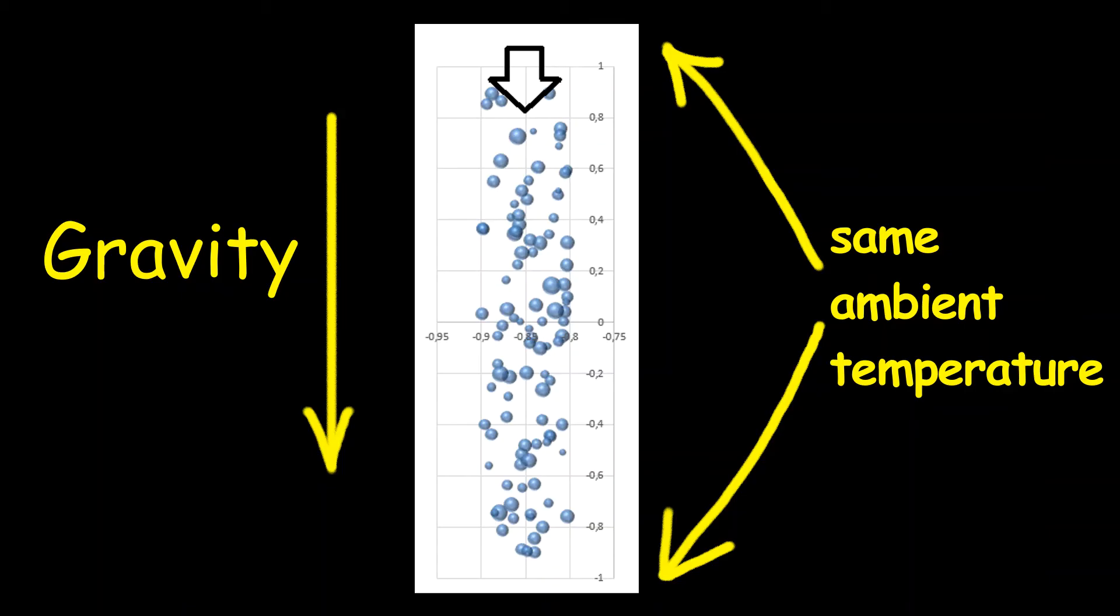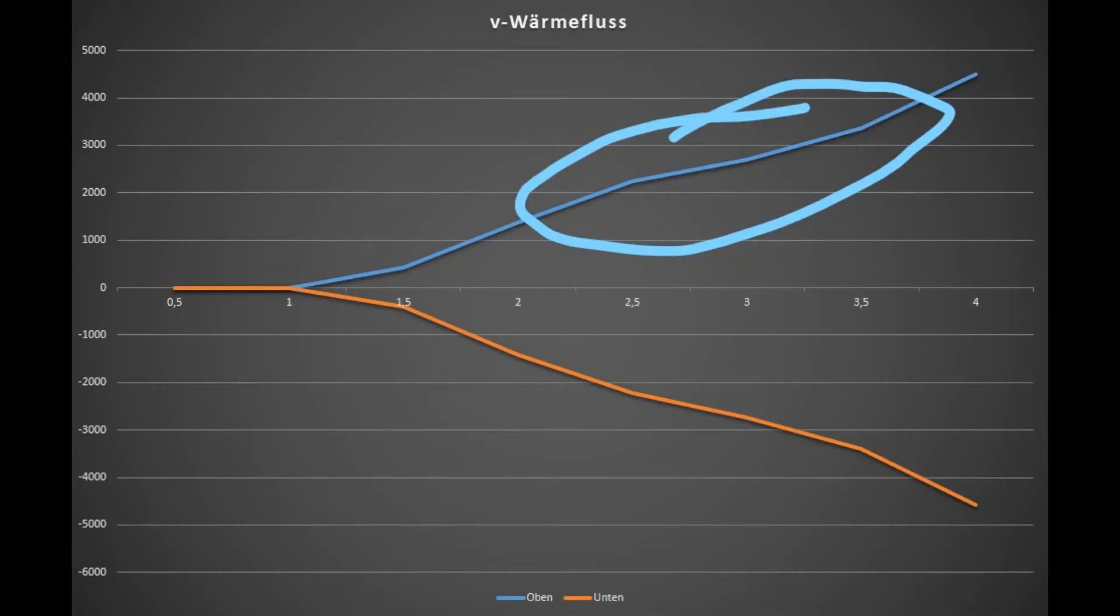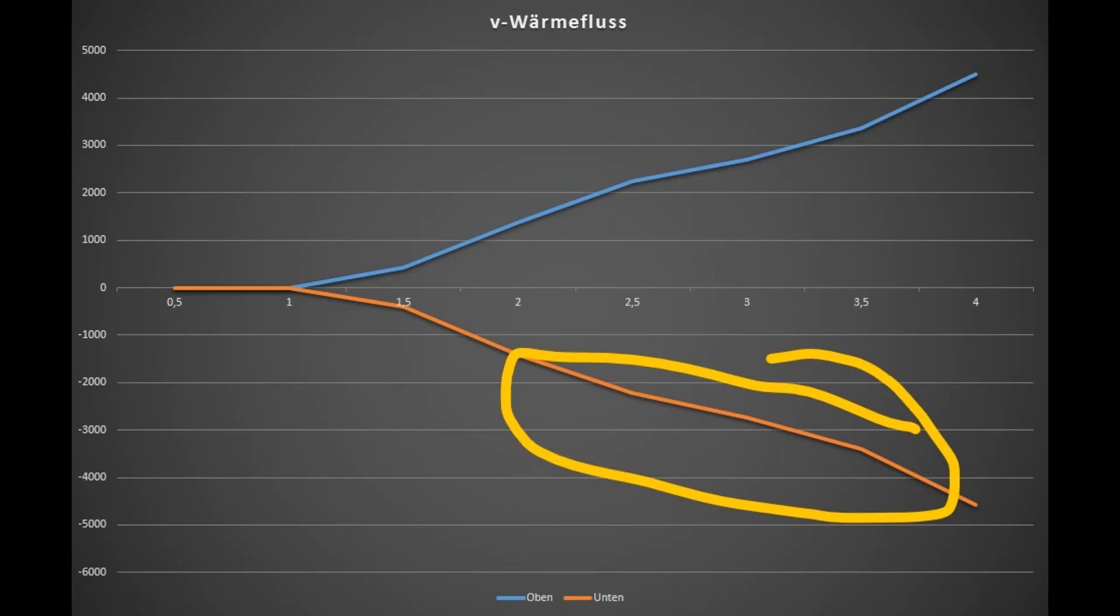With the same ambient temperature above and below, a heat flow is established. The heat that is absorbed above is given off below.